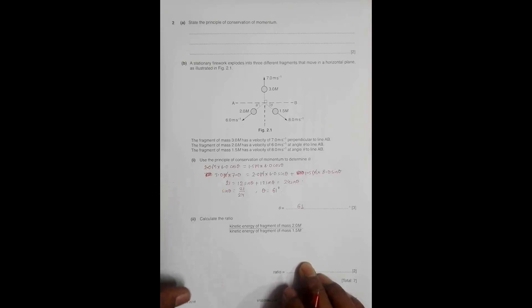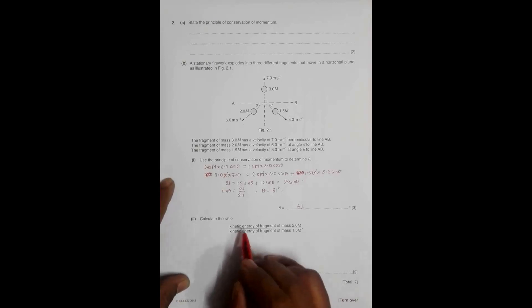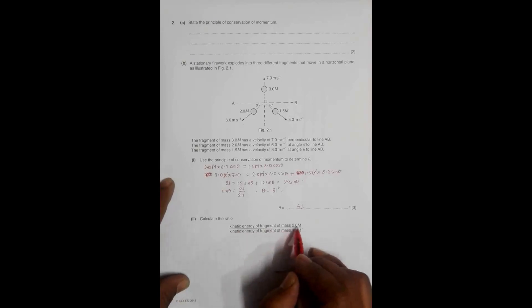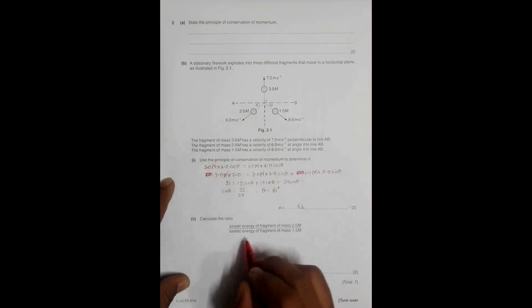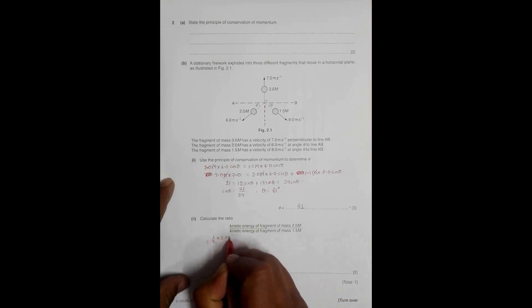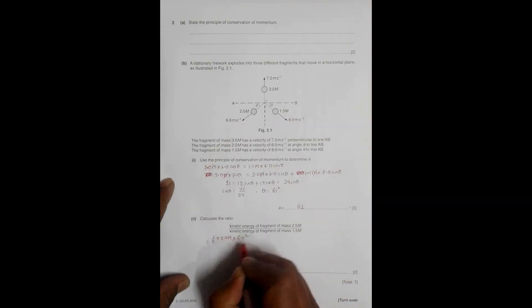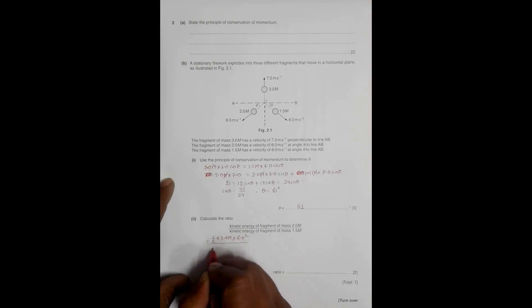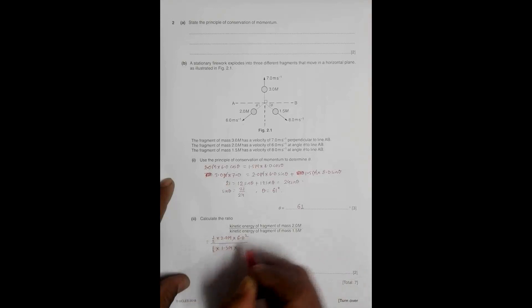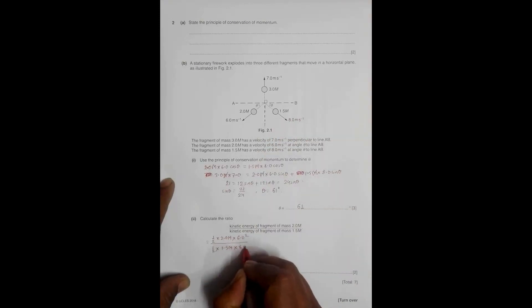Now in the second question, I have to find the kinetic energy ratio of the fragment of mass 2.0m to the fragment of mass 1.5m. This equals one-half into 2.0m into 6.0 squared, divided by one-half into 1.5m into 8.0 squared.